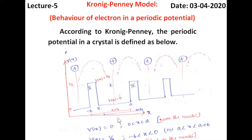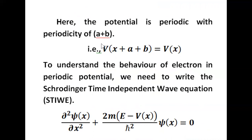According to the Kronig-Penney periodic potential, we have two regions: in region 1 the potential is 0 extending from x = 0 to x = a, and in region 2 the potential is V0 extending from x = minus b to x = 0. This is the simplest model to understand the behavior of electrons in a periodic potential. The potential is periodic with periodicity a+b, so we can write V(x + a + b) = V(x).